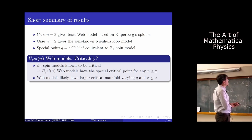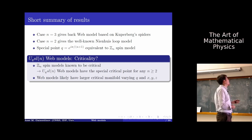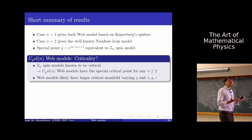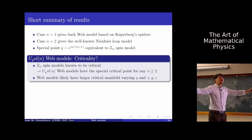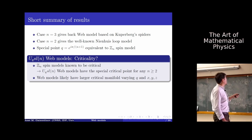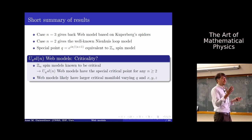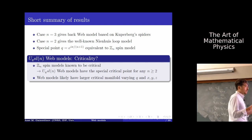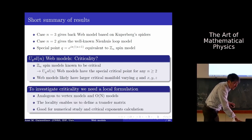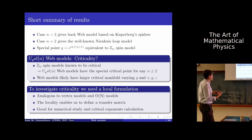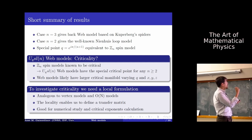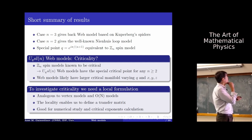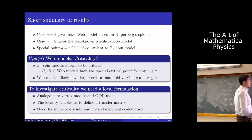These spin models are known to be critical, and they appear as a particular instance of this more general web model which has many more parameters and much more freedom. We expect from this mapping that web models have special critical points for any N — at least the one corresponding to the spin model. But there are more, and web models likely have a larger critical manifold as we vary Q, x, y, and z. To investigate criticality, we need a local formulation of the model analogous to vertex models for loop models, which enables us to construct a transfer matrix and study phase diagrams and critical exponents.